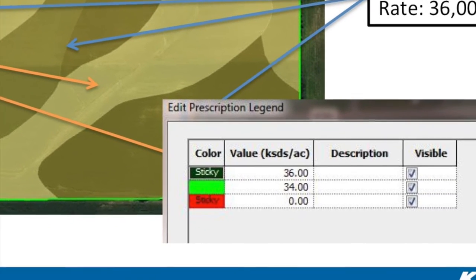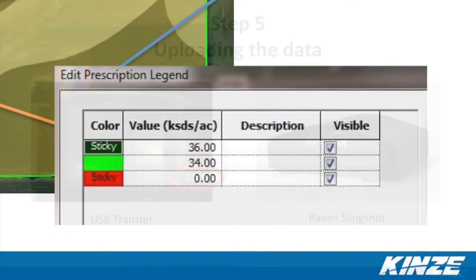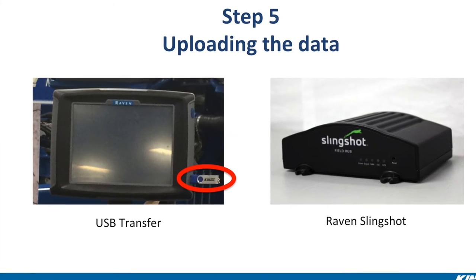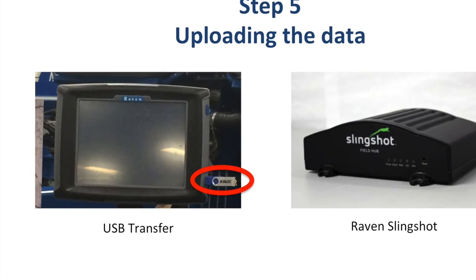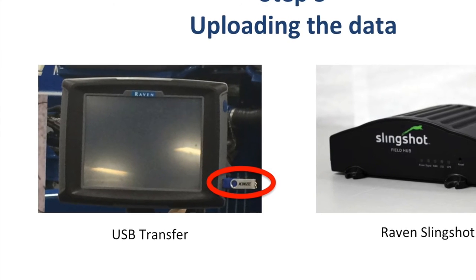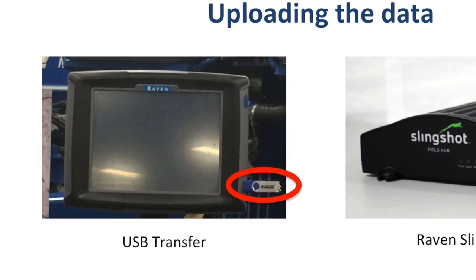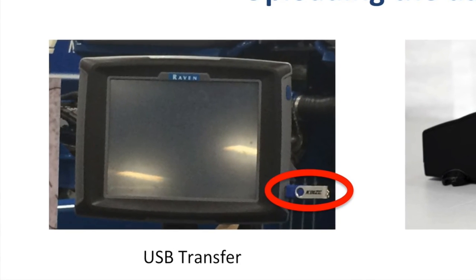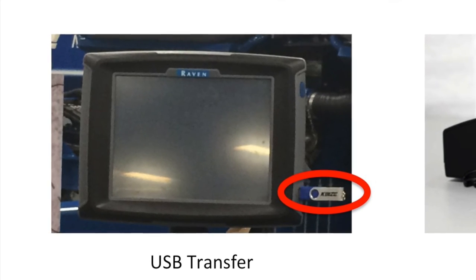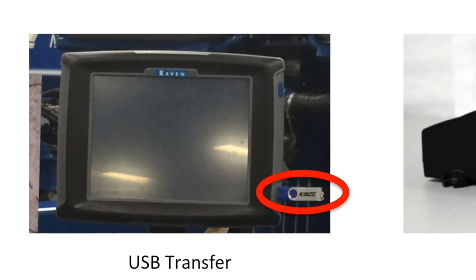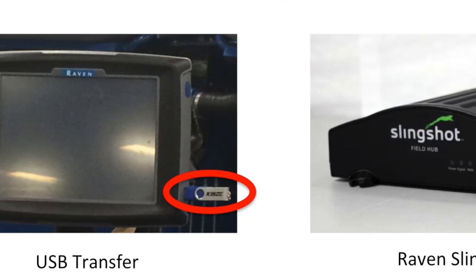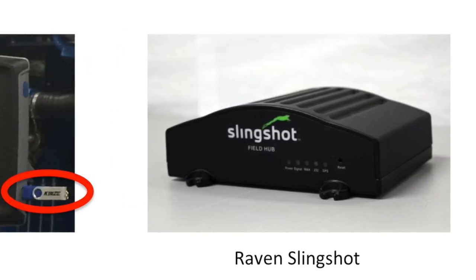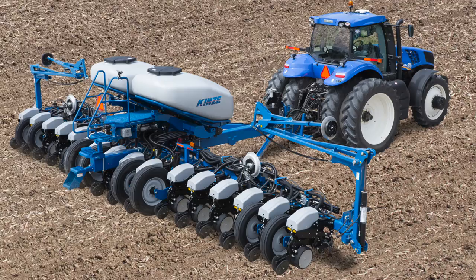After inputting the plant rate data into your desktop software, the final step of the pre-season process is loading that data into your display. For standard prescription planting with most ISO planter monitors, this is done with a USB drive. The same is true when loading multiple hybrid prescriptions into the Raven Invisio Pro monitor used to control the Kinsey 4900 Multi-Hybrid Electric Drive Planter, seen on the left-hand portion of your screen. However, with the Invisio Pro, that same data can be transferred electronically if the monitor is equipped with the optional Raven Slingshot wireless data transfer tool, seen on the right side of your screen.